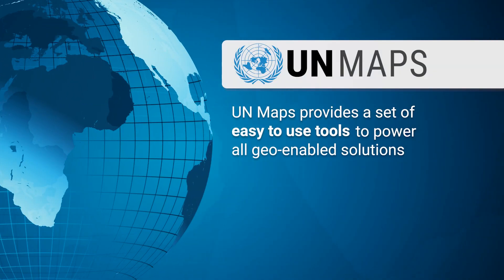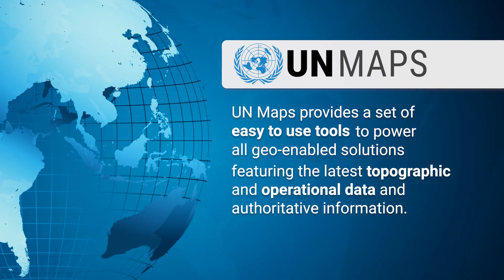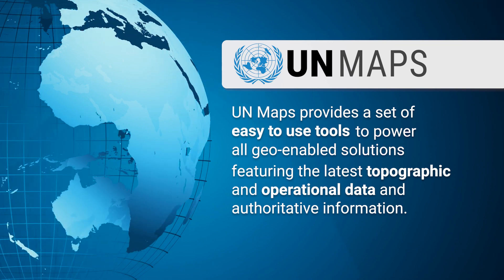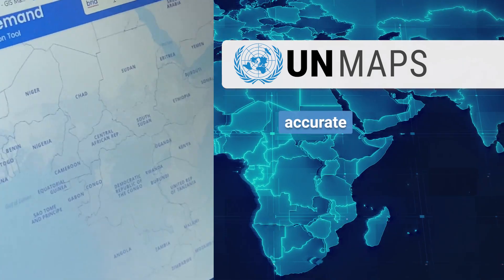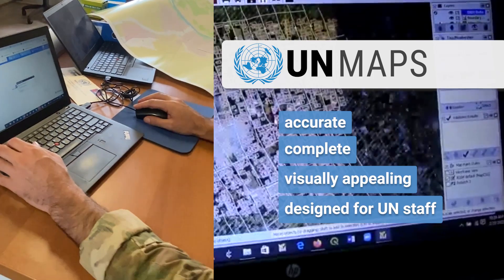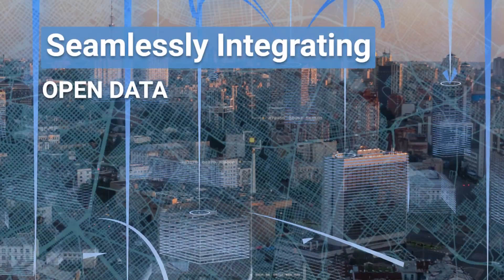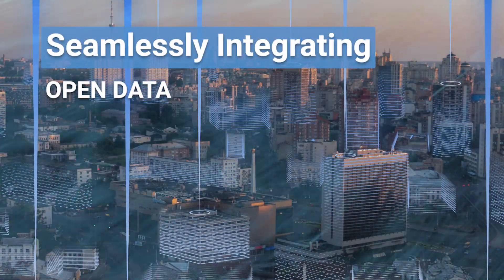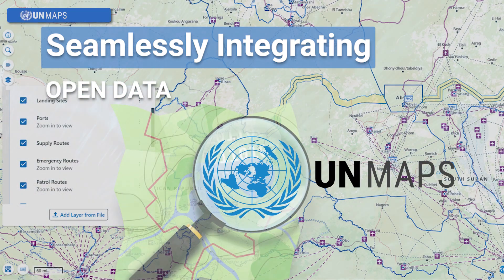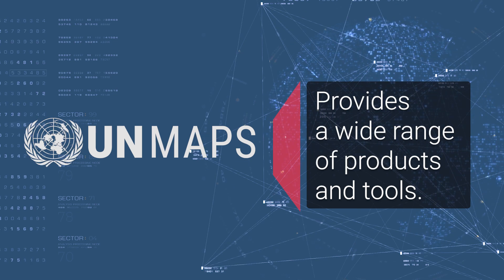Featuring the latest topographic and operational data and authoritative information, UN Maps is accurate, complete, visually appealing, and specifically tailored to help UN staff in their daily tasks. It seamlessly integrates open data such as OpenStreetMap with UN-specific data into the same platform. UN Maps provides a wide range of products and tools.